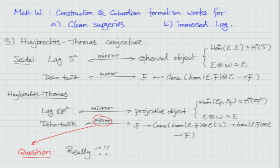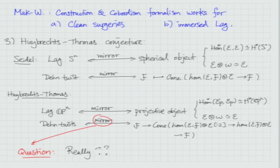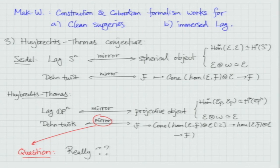What Seidel proved exactly is that this mirror on the second row is true, because you can actually match the cone expression with the spherical twist on the B side. You just change to an arbitrary Lagrangian, and then the cone — with Lagrangian sphere and arbitrary Lagrangian — is exactly Seidel's Dehn twist. So if you do this naive translation to the A side, this is exactly Seidel's exact sequence.